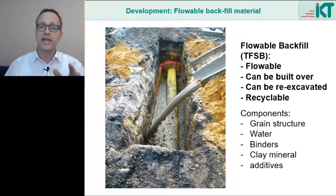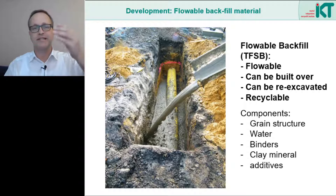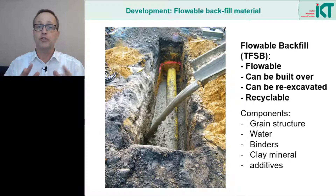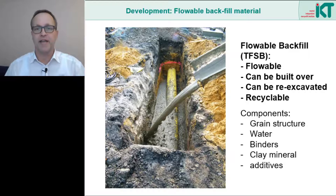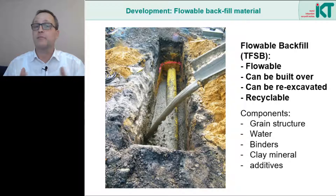This was also the case in this picture. The pipe zone was filled with flowable backfill and a tree was planted directly above it in a substrate with good root penetration properties. The root should therefore develop well, but not in the area of the pipeline. Typical components of flowable backfill are a grain structure — this can be sand or gravel, but also recycling material. We can also use the excavated soil, even if it is a bit cohesive. Then we need water and a binding agent, for example cement or lime. Finally, a clay mineral is used to ensure flowability and water binding — that can be, for example, bentonite — and there are other additives depending on the manufacturer.